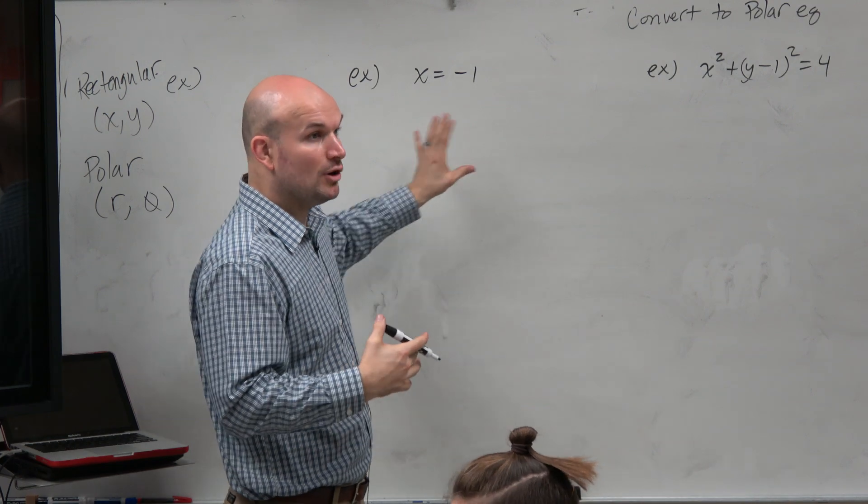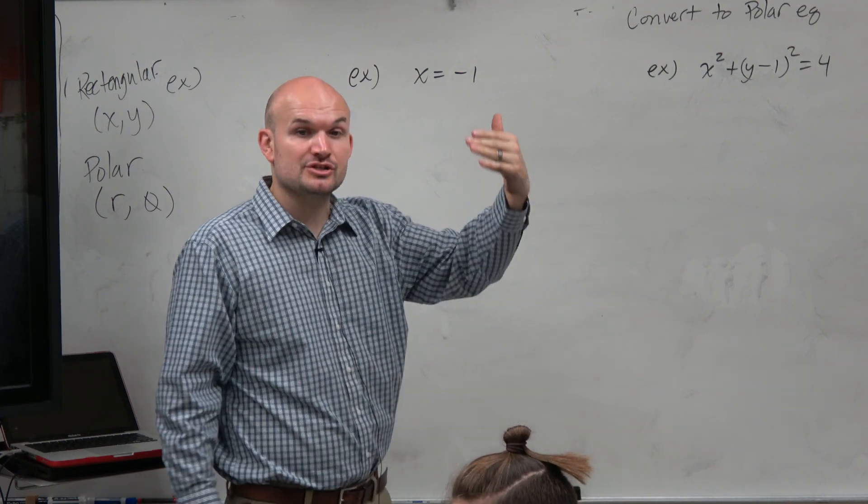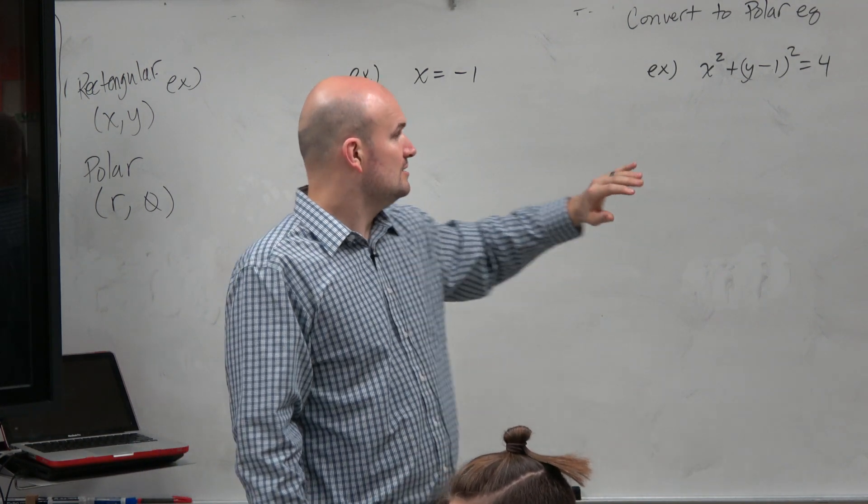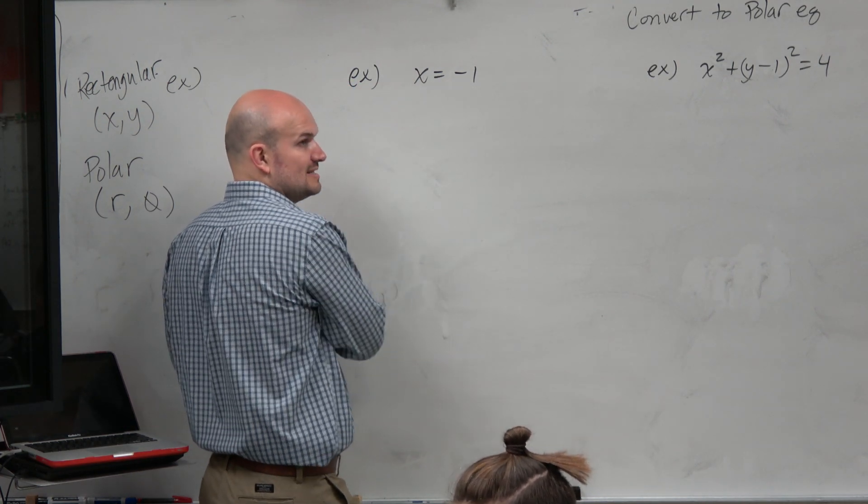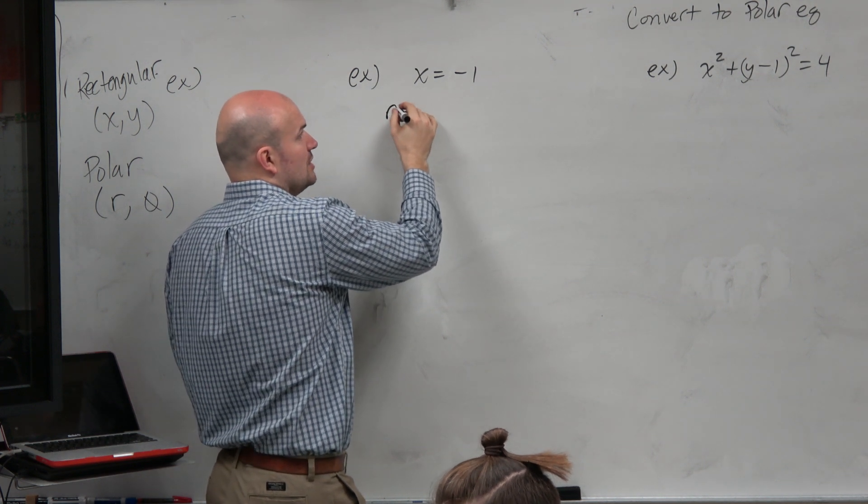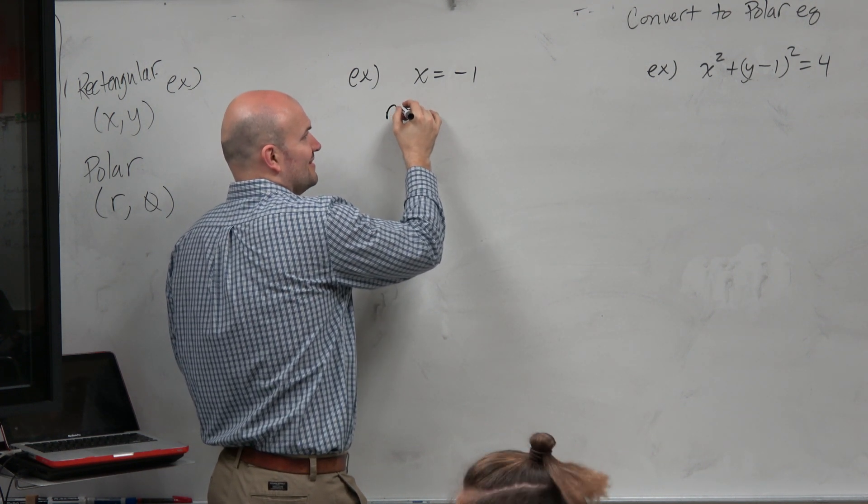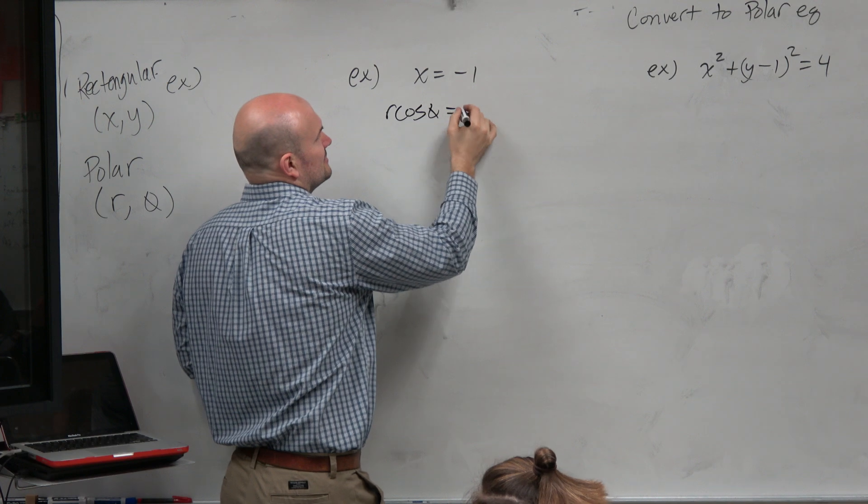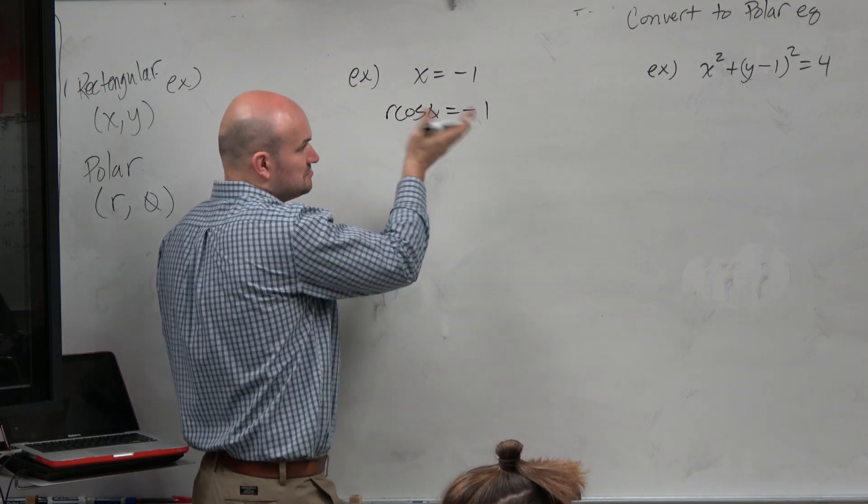If we want to graph it on a polar axis, though, we need to understand it in terms of r and theta. So one thing we can look at here is we recognize the x. Based on our equation, we know we can replace x with r cosine of theta. And there we go. Done.